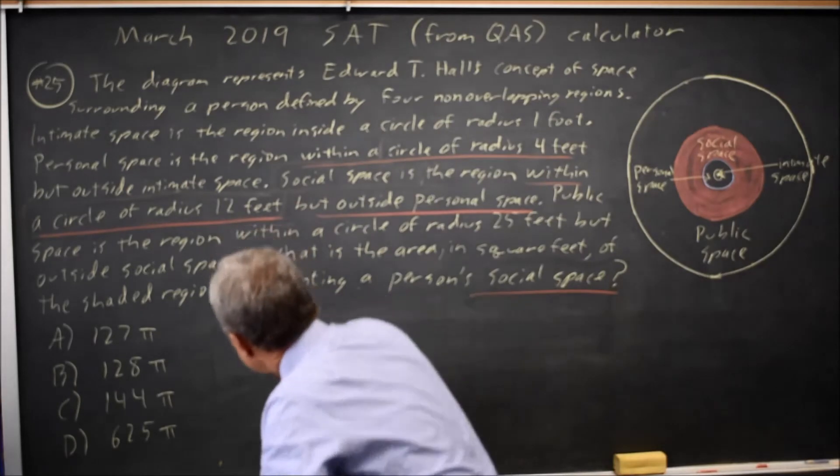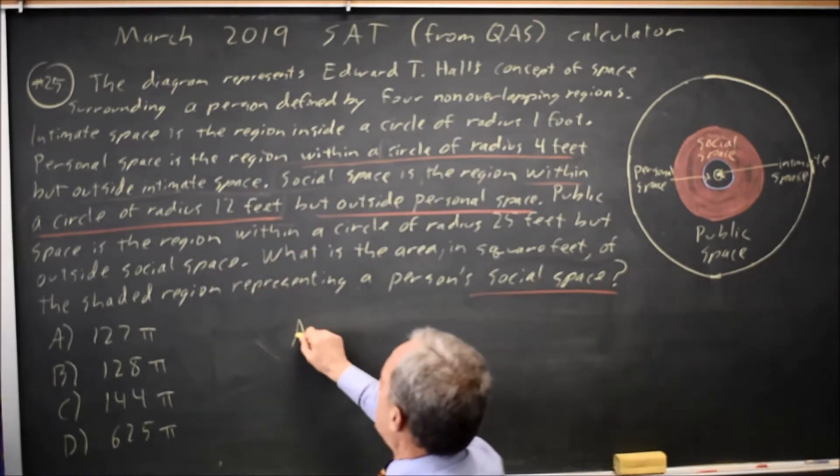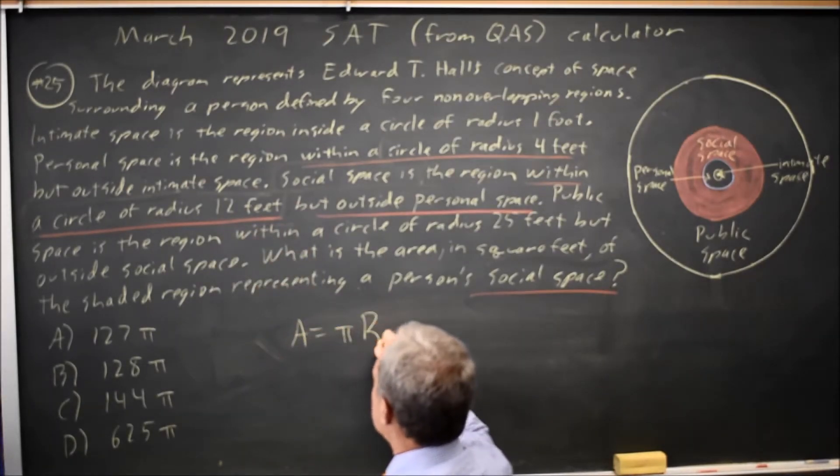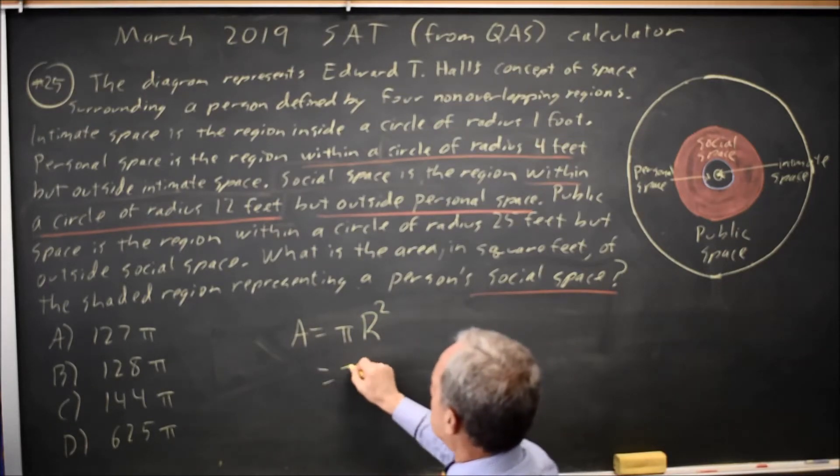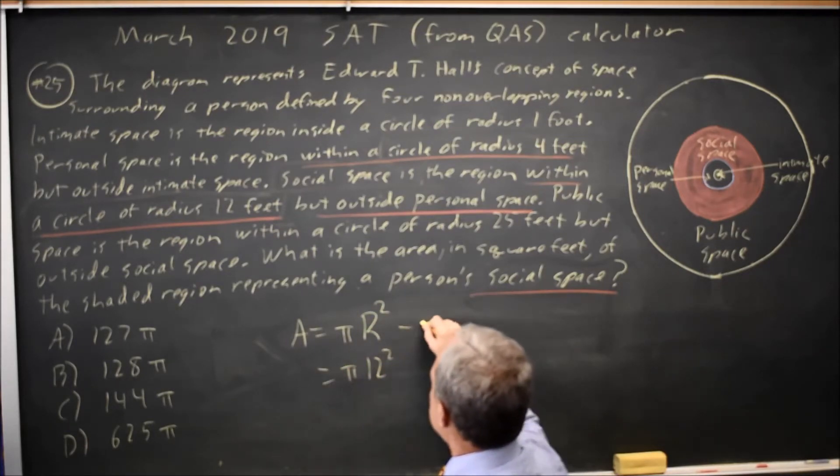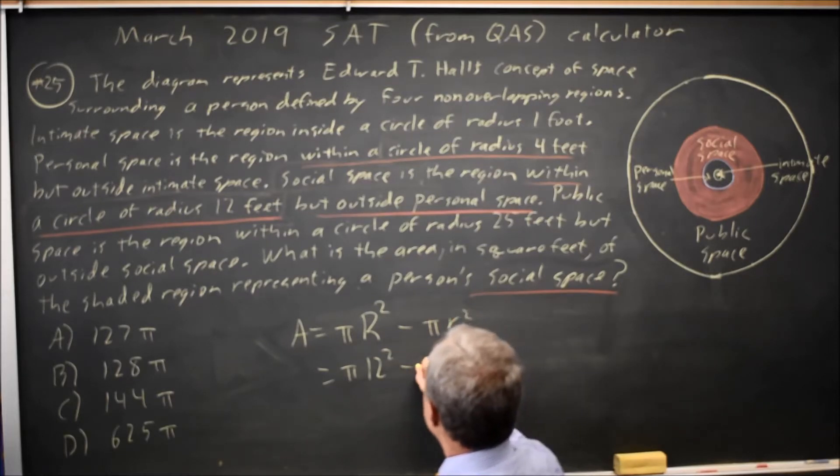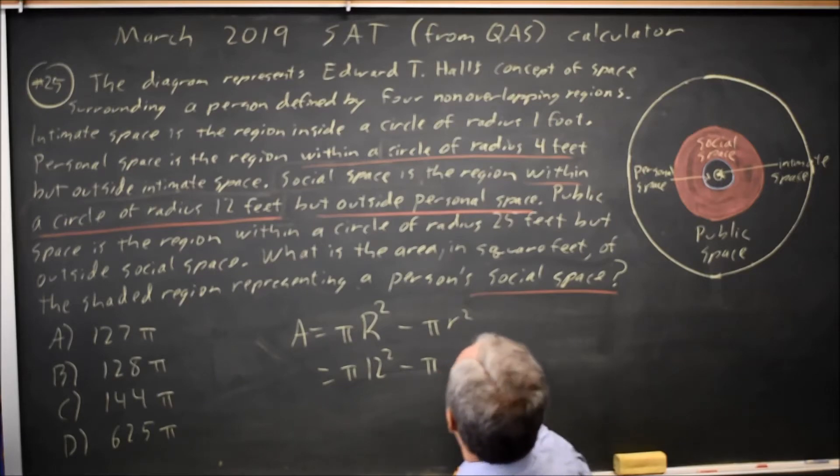So the area of social space is pi big R squared, where big R is the radius of social space, minus pi little r squared, where little r is the outside radius of personal space.